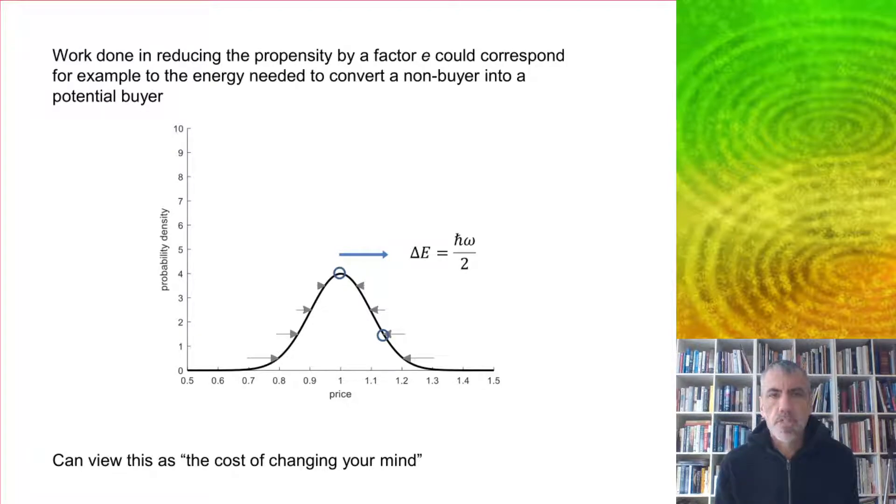The work done in reducing the propensity by a factor E could correspond to the energy needed to convert a non-buyer into a potential buyer in a transaction, shifting on the propensity curve from one spot to another. You can view this as the cost of changing your mind.